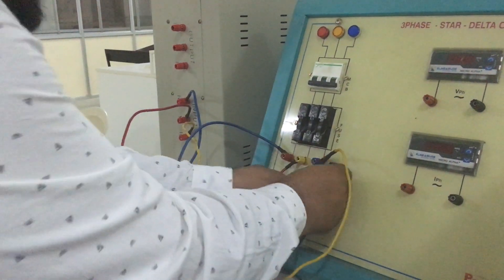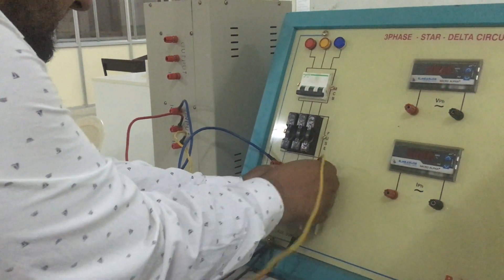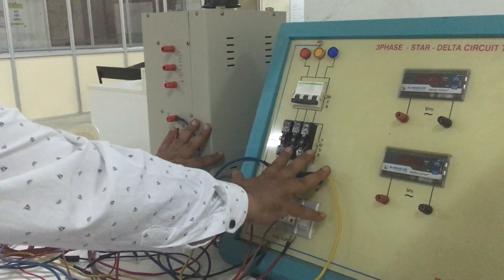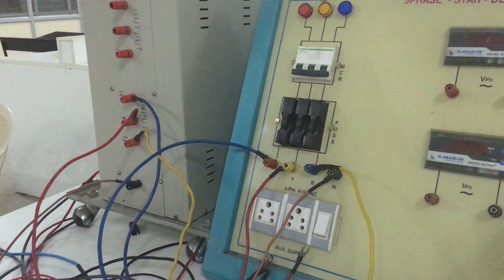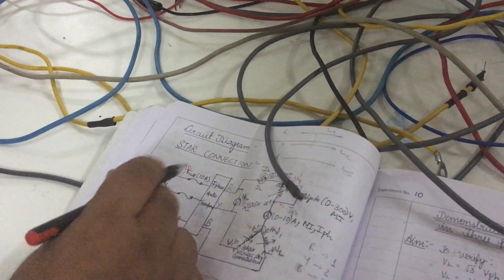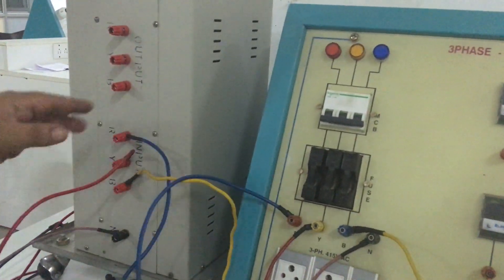Once this input connection has been done, leave the output side — don't give any connection there. Many people are confusing themselves and giving connections on the output side as well. This is the input part of the auto transformer; the output connections come separately after this.